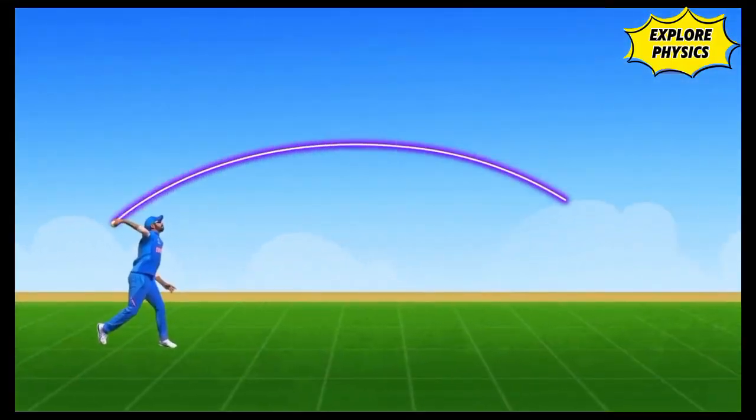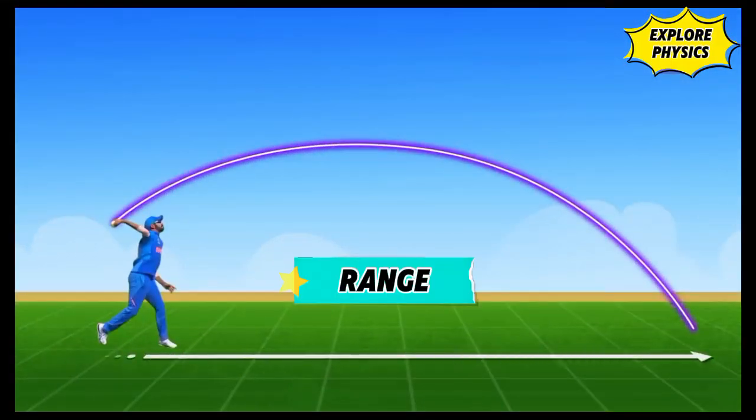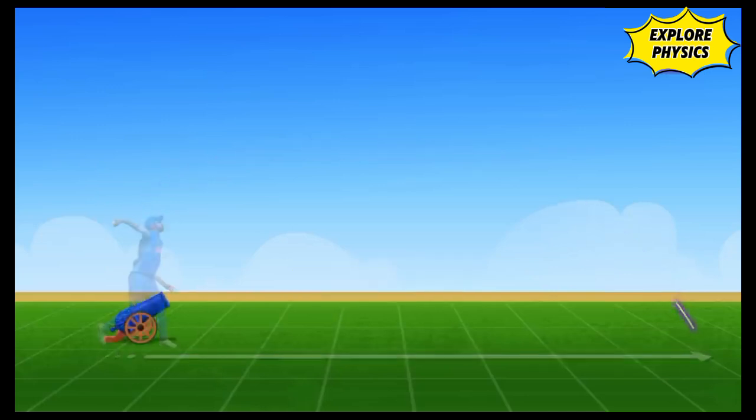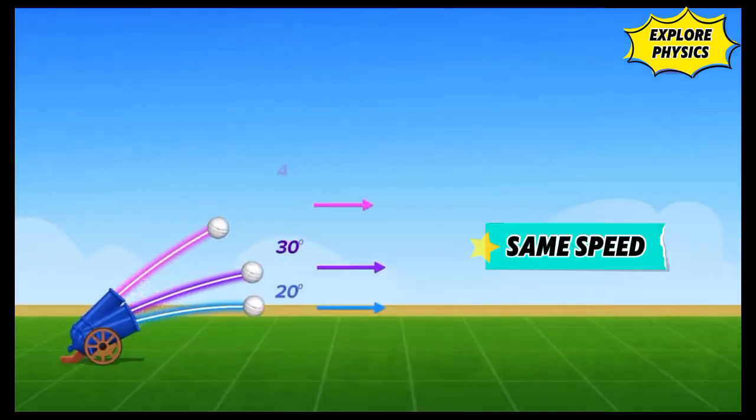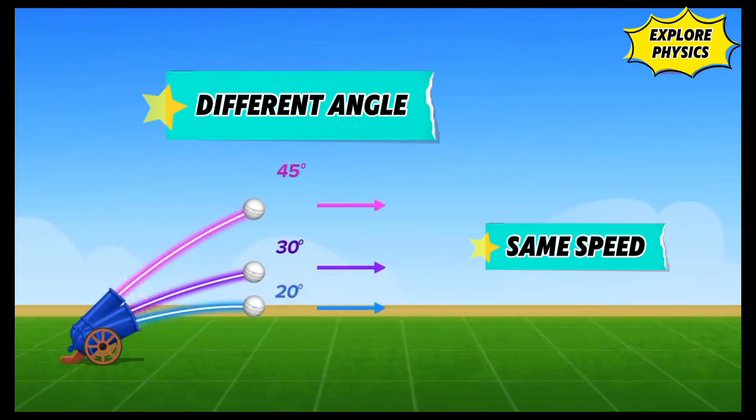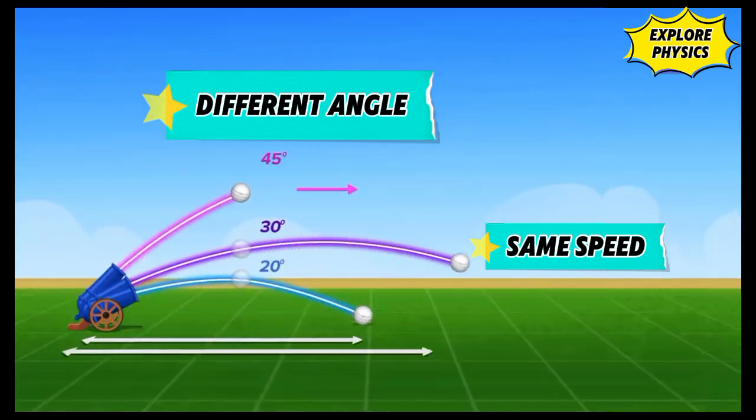The horizontal distance covered by a projectile is called its horizontal range. Notice the range as we launch cannonballs at the same speed but different angles. It appears that the range increases as the angle increases.